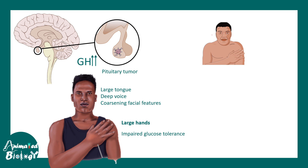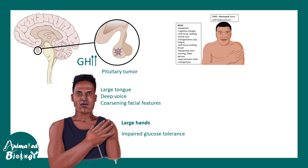There are also defects at multiple levels. In the head and brain, individuals experience frequent headaches, cognitive and IQ-related problems, soft tissue swelling, a broad nose, and many other problems. They also have poor eyesight and impaired vision. There can be skin thickening, oily and sweaty skin.